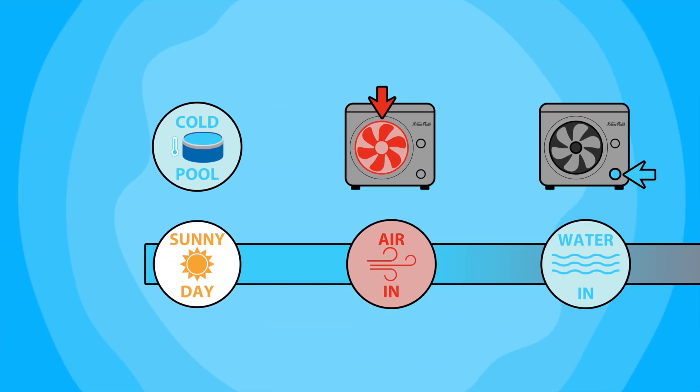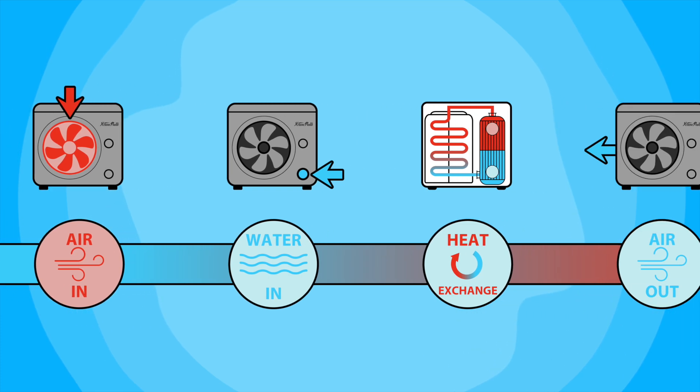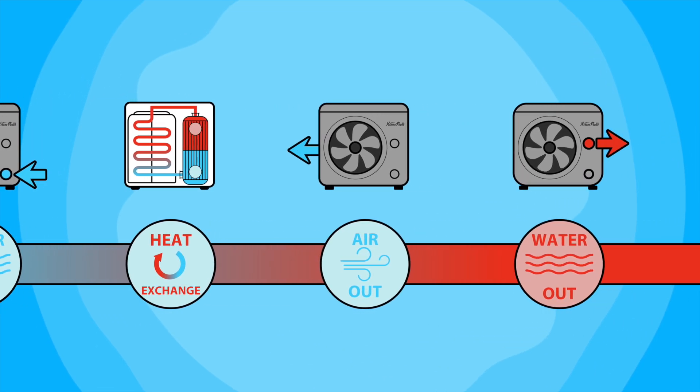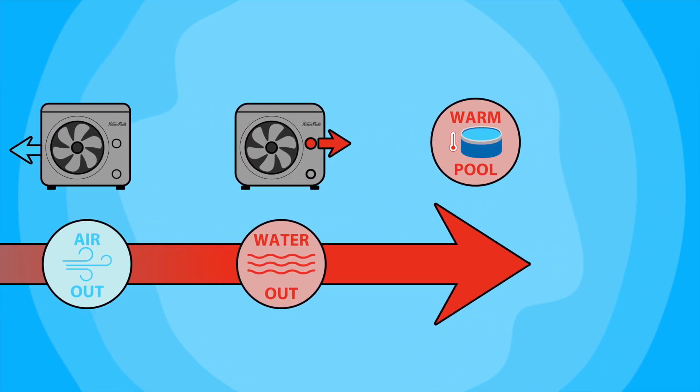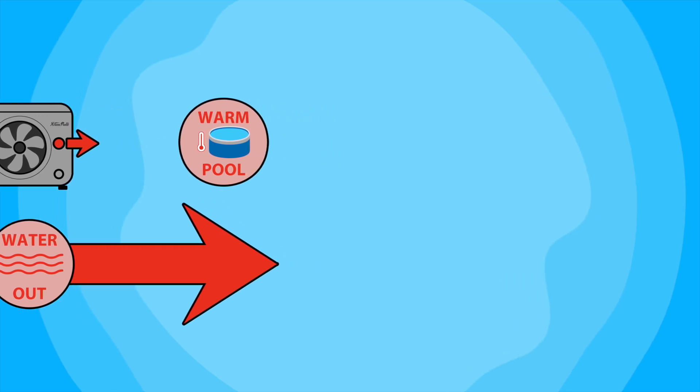By continuously extracting heat from the surrounding air and transferring it to the pool water, the heat pump gradually raises the water temperature. This method of heat transfer is highly efficient and can provide consistent heating for your pool.